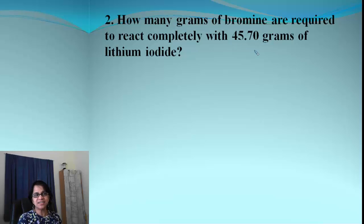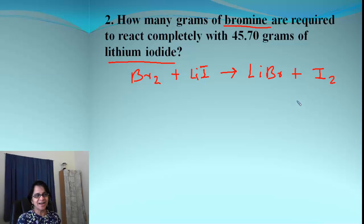The next problem, let's write the reaction first and quickly you can figure out there is bromine and there is lithium iodide. So the reaction takes place between these two and then we have to figure out the products ourselves. As you can tell, this is a single replacement. So what we get is lithium bromide, LiBr, and iodine as I2.